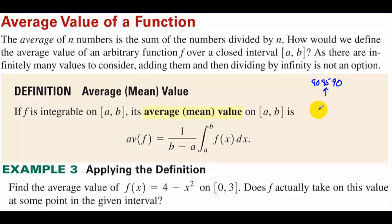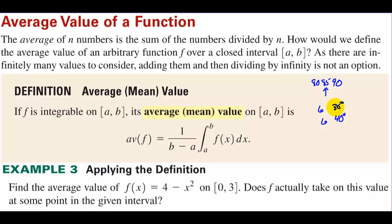But what if the temperature in the morning at 6 o'clock was 30 degrees, and at 6 o'clock at night it got up to 40 degrees? The average temperature is not necessarily 35 degrees — there's an infinite amount of values between 30 and 40, and temperature is a continuous function that actually hits every single temperature in between. So we can't just add all the values up and divide by how many there are.